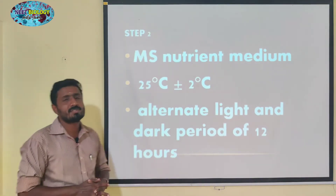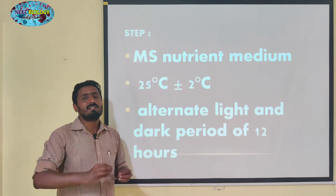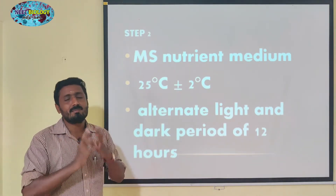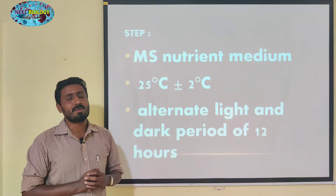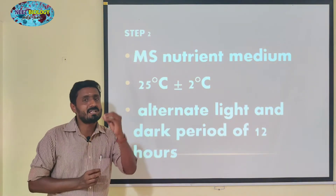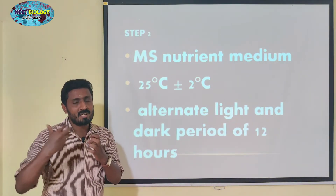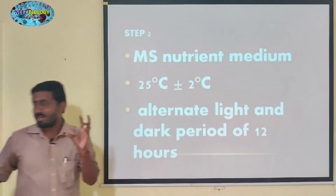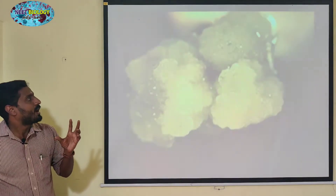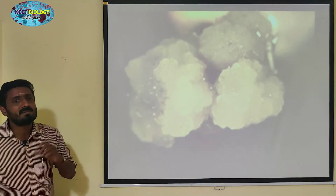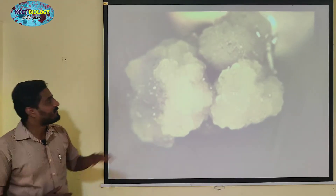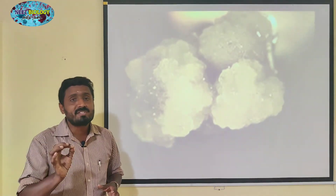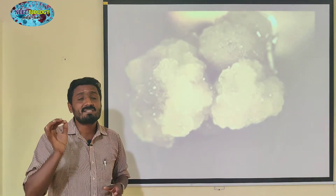The cells develop and divide. The explant cells divide, and finally the undifferentiated mass of cells — callus — is formed. This is an undifferentiated mass of cells.